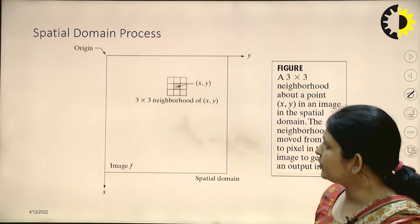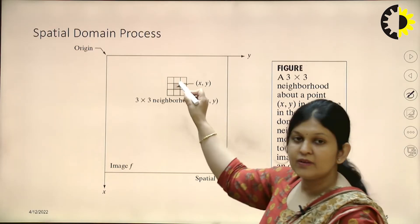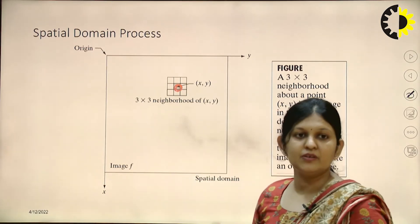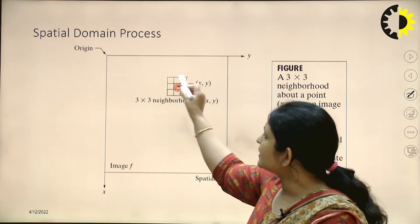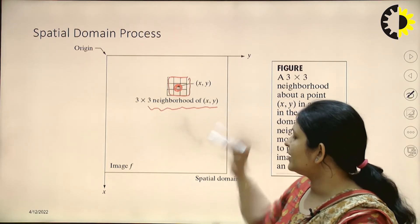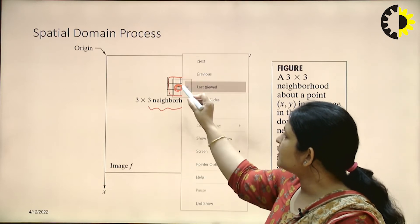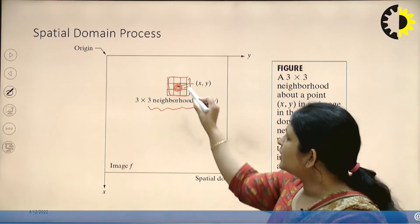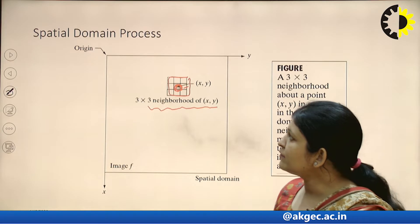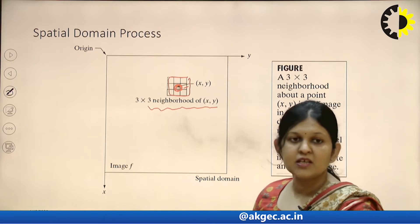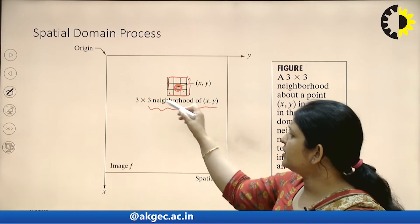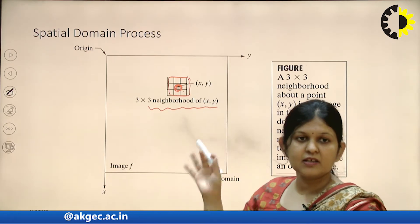Let us see what is the neighborhood of points. For a particular pixel where we want to find a new value, we consider its neighborhood pixels. Here we have taken a 3×3 neighborhood of x, y from the entire image. The value of this particular coordinate x, y would depend upon its neighboring 3×3 pixels. So when we talk about the spatial domain process, we work on neighborhood operations, and the new value would be dependent upon the corresponding neighbors.